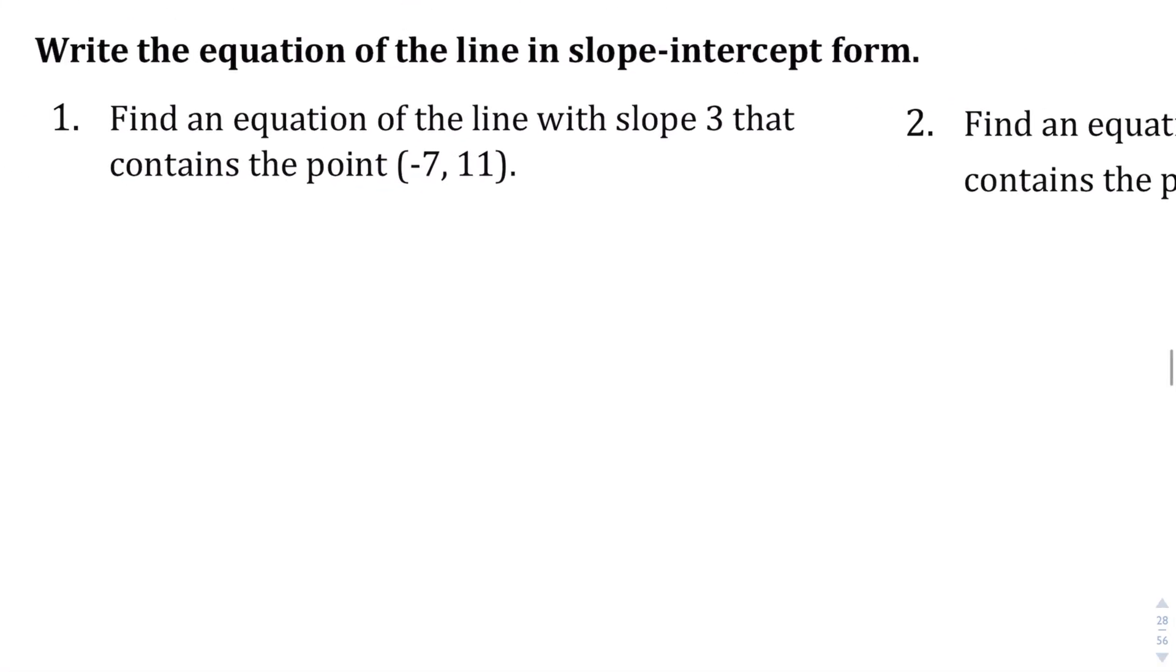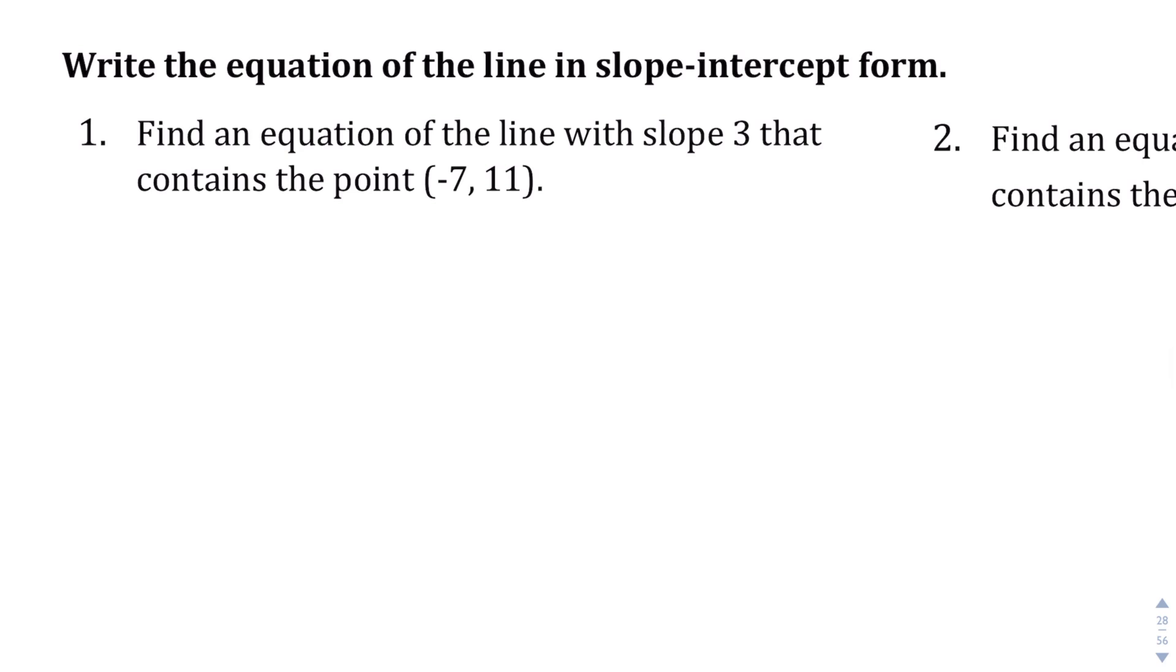Question number one, find an equation of the line with slope 3 that contains that point, negative 7, 11. Okay, so as we should have noticed in explain 1a, the slope-intercept form is y equals mx plus b, and so we are told that the slope is 3, so the m is the slope value, so I'm going to go ahead and put 3 in for where the m used to be, and then we are given this point here as well, and that's the x value, that's the y value, so all we have to do is plug it in, and the reason why we're going to plug those values in is because that will tell us what the b value is.